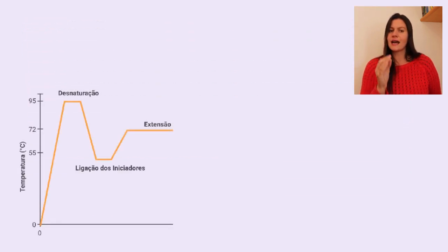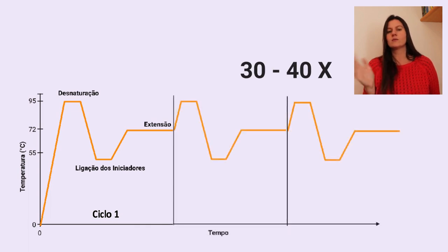Essa ciclagem, 95, 60 e depois 72 graus, é repetida entre 30 a 40 vezes em uma reação típica, que geralmente demora cerca de 2 a 3 horas para acontecer e esse tempo é dependente do tamanho de nucleotídeos da região de DNA que vai ser copiada.